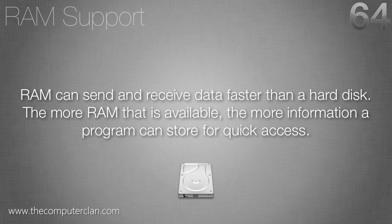RAM is important because it can send and receive data faster than a hard disk. Your RAM doesn't store information permanently — it stores it temporarily, and every time your computer is turned off, it's wiped out. It's not a storage device like your hard drive, which holds all the files on your computer. When you open programs, it reads information off the disk but stores other information in RAM, because the more RAM available, the more information a program can store for quick access. RAM can read and write data way faster than a hard drive can. It doesn't matter how much RAM you have over 4 gigabytes if you're on a 32-bit system, because you'll be restricted to 3.25 gigabytes. If you want more than 3.25 gigabytes of RAM, you should have a 64-bit system — meaning a 64-bit processor and a 64-bit operating system.